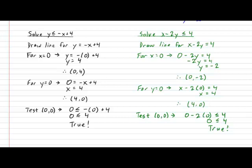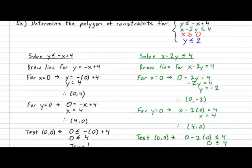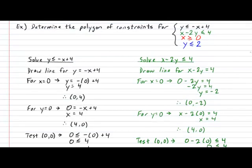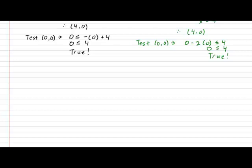Therefore, the shaded region for this inequality will be the region that contains our test point (0, 0). This is pretty much all the legwork we need to do, because the last two inequalities — the line x equals zero and the line y equals two — are both very easy to draw without showing much work. We're just going to draw them in our grid. To accommodate the lines representing these four inequalities, we're going to need a grid that's about this size. Go ahead, pause the video, and prepare your grid now.